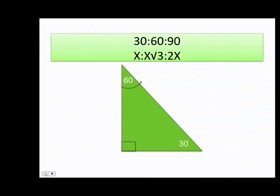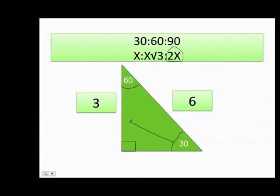I switched the values — I put the 60 here and the 30 here — and I can do that as long as I respect the ratio. Now they give me the hypotenuse as 6. Remember, the value of x is half of that, because 90 degrees follows the ratio 2x. Therefore x equals 3. But remember this is the 60-degree angle, and x belongs to the 30-degree angle, so I put 3 there. Now I can figure out the 60-degree side, which is 3 times the square root of 3.